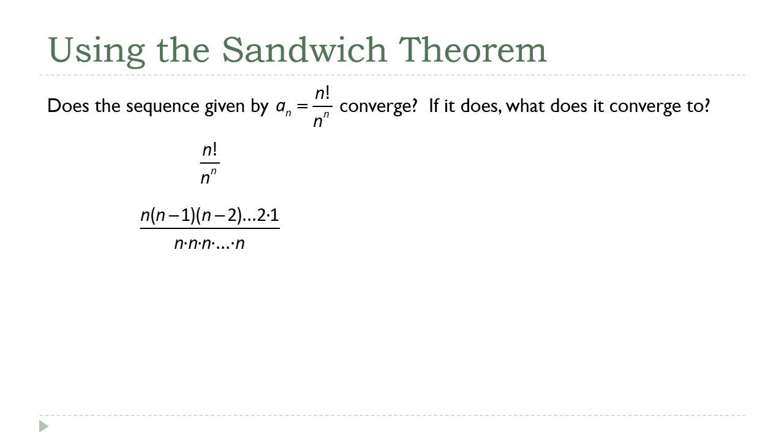And in the denominator, I'm going to write out n times itself n times. Now, what I want you to notice here is that there are n factors in the numerator and n factors in the denominator.